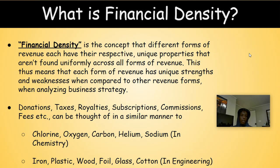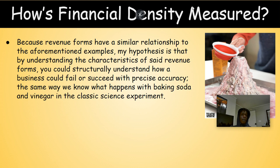The concept of financial density: financial density is a concept where different forms of revenue each have their respective unique properties that aren't found uniformly across all forms of revenue. This means each form of revenue has unique strengths and weaknesses when compared to other revenue forms when analyzing business strategy. Donations, taxes, royalties, subscriptions, commissions, and fees can be thought of similarly to elements like chlorine, oxygen, carbon, or materials like iron, plastic, and wood in engineering. My hypothesis is that by understanding the characteristics of these revenue forms, you can structurally understand how a business could fail or succeed with precise accuracy.